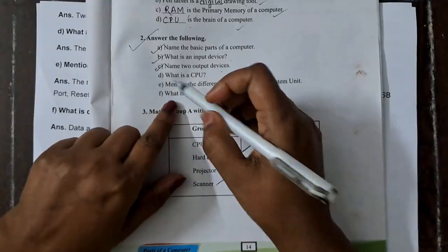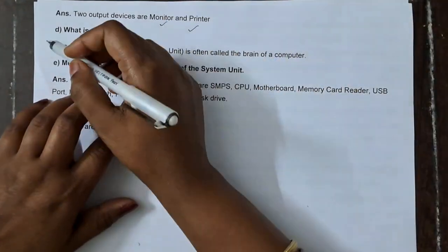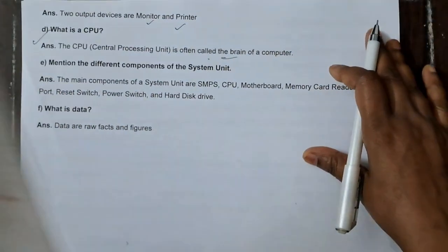Now, what is a CPU? CPU is a central processing unit. Central processing unit is often called brain of a computer.